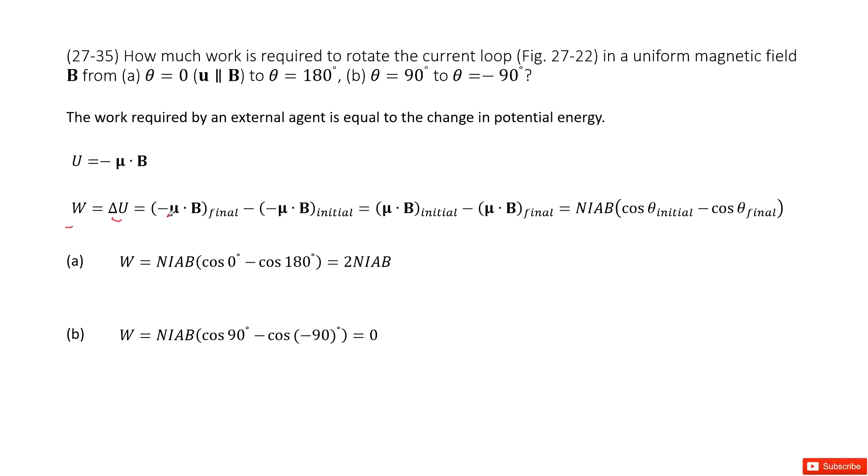So now you use the final potential energy minus initial potential energy. Reorganize it, it looks like this one. And also this μ is the magnetic dipole momentum.